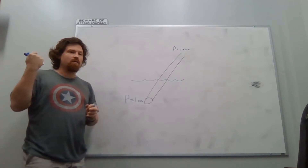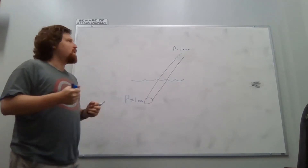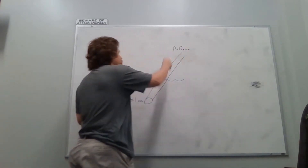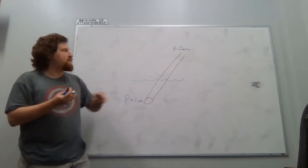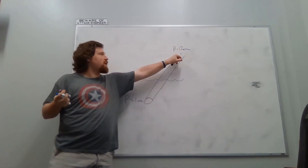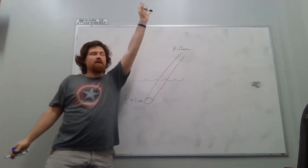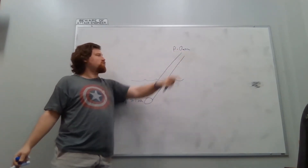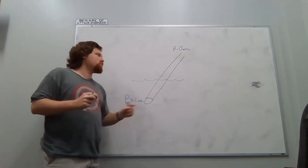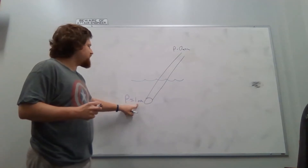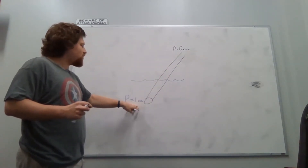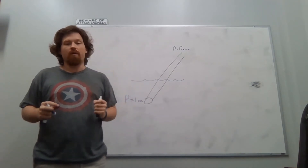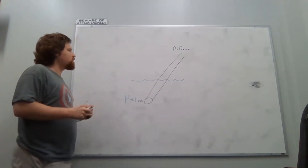When you inhale on one end of the straw, that decreases the pressure at that end. You are removing the air molecules that were in the top of the straw — there is now less air up there, which means less pressure up there. The air pressure at the top of the straw drops toward zero. The reason water comes up through the straw is because there is more pressure at the bottom than at the top, so that greater pressure pushes the water up the straw to get to the zone of lower pressure. That is how straws work.